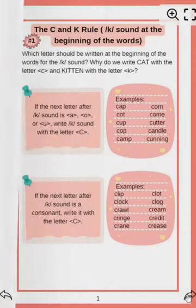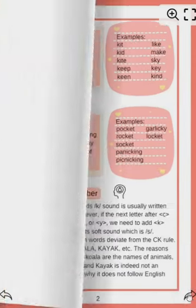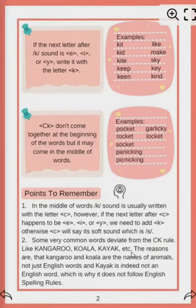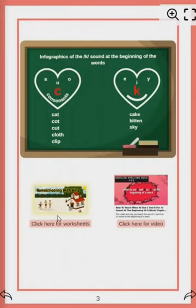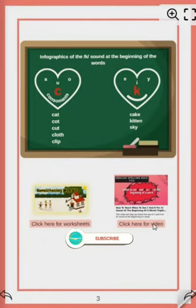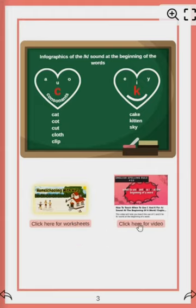Now let's see how the book looks from inside. This is the CK rule — the explanation is here, the examples are here. If there are some exceptions to the rule or some points to remember, they are written under this heading. Then you have 'click here for worksheet' and 'click here for video' — two tabs. If you click here, you will land on my website page where you will find the worksheet for the CK rule.